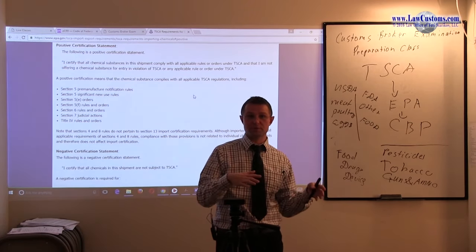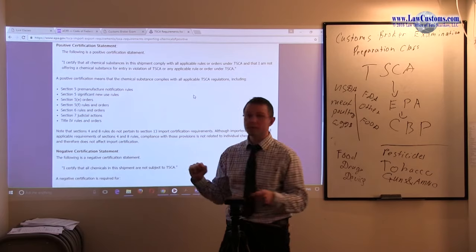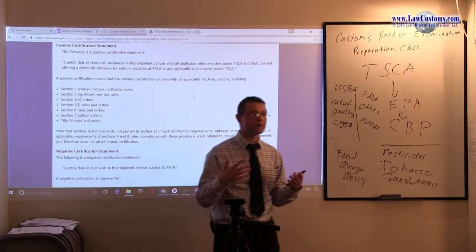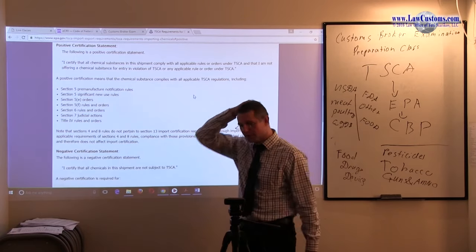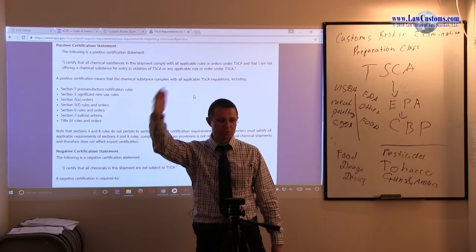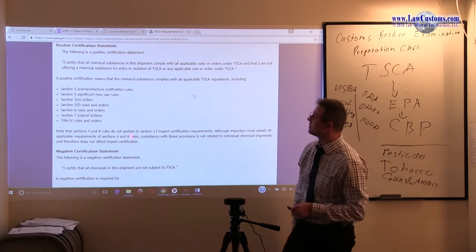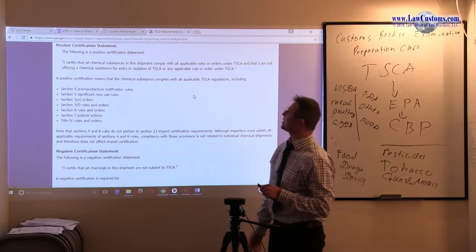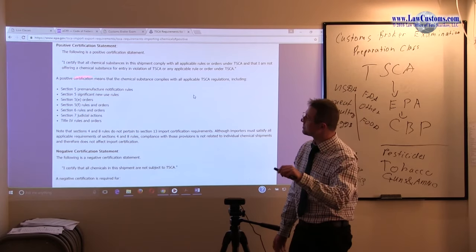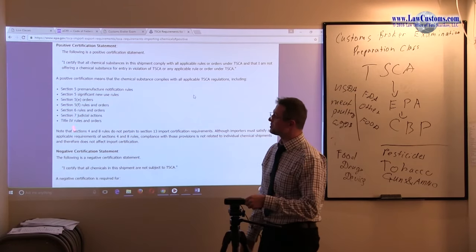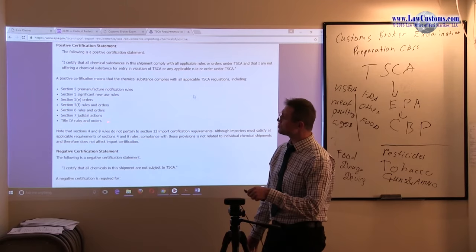They're going to give you the document with positive certification which you will adopt in your declaration to U.S. Customs, either by paper or electronically. But sometimes the importer may not be so knowledgeable, so the question for you as a licensed customs broker may be, okay, now what do I do? What can I do to go through the compliance test? Well, EPA lays it out for you.